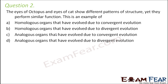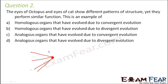Question number 2: The eyes of octopus and eyes of cat show different patterns of structure, yet they perform similar function. This is an example of what? Whenever you have organs with different structure but performing similar function, that is analogous organs. Octopus and cat are different, unrelated species, but they have something which performs the same function. It is like different groups of organisms meeting at a common point — that is convergent evolution. So this is analogous organs that have evolved due to convergent evolution.